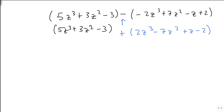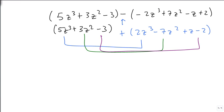So then we just combine our like terms. And again, we only have 3 like terms here, but 5z cubed plus 2z cubed is 7z cubed. 3z squared minus 7z squared is minus 4z squared. 0 plus z is z, and minus 3 minus 2 is minus 5.